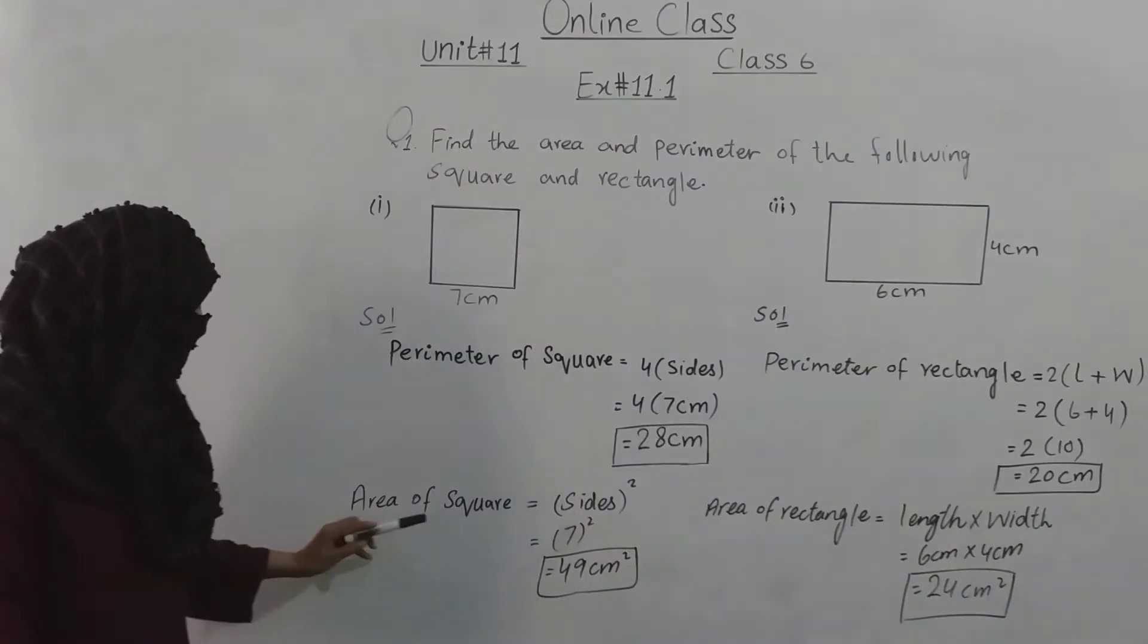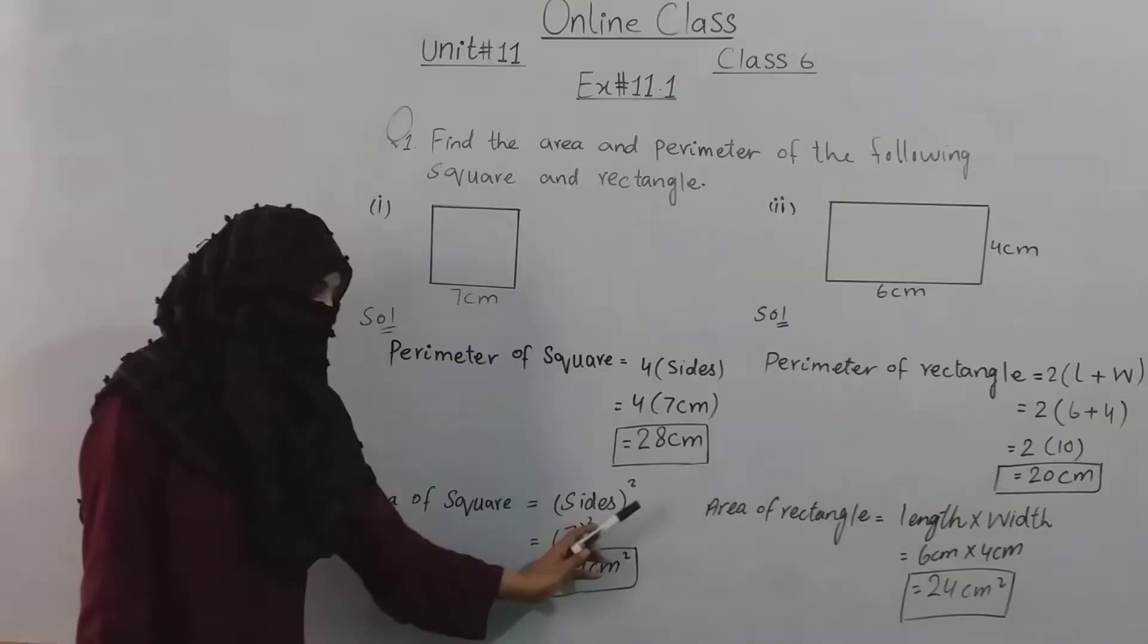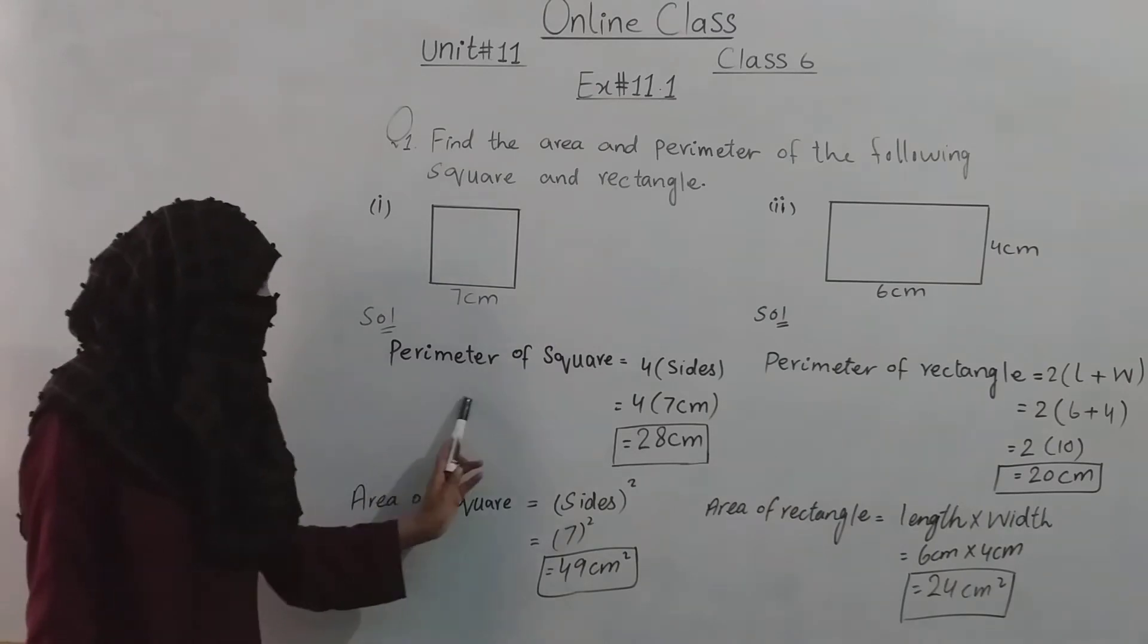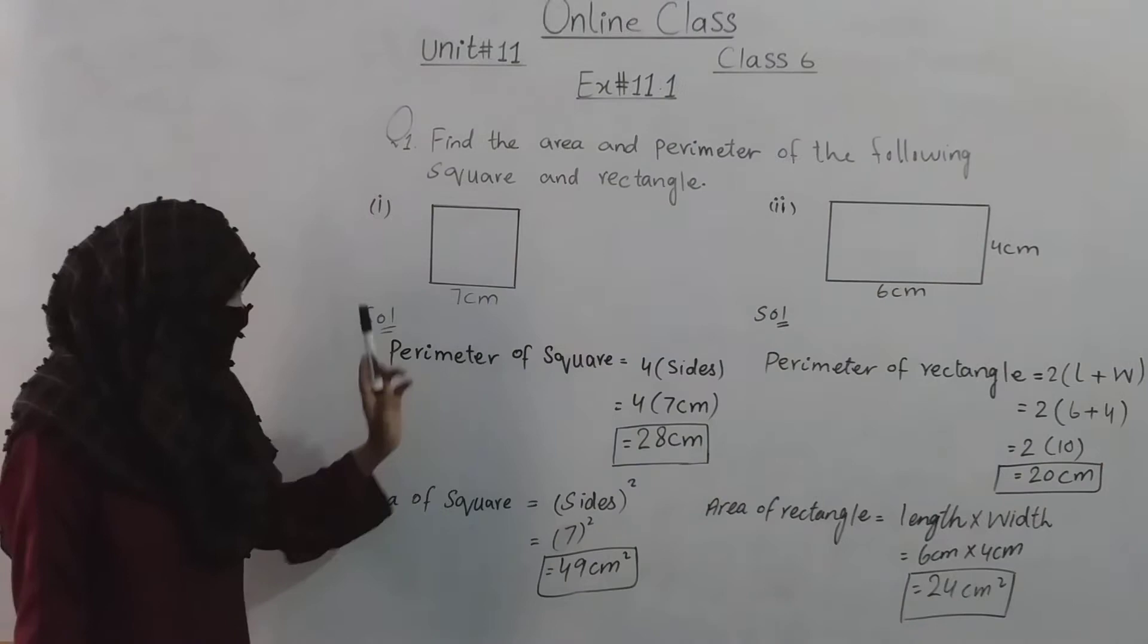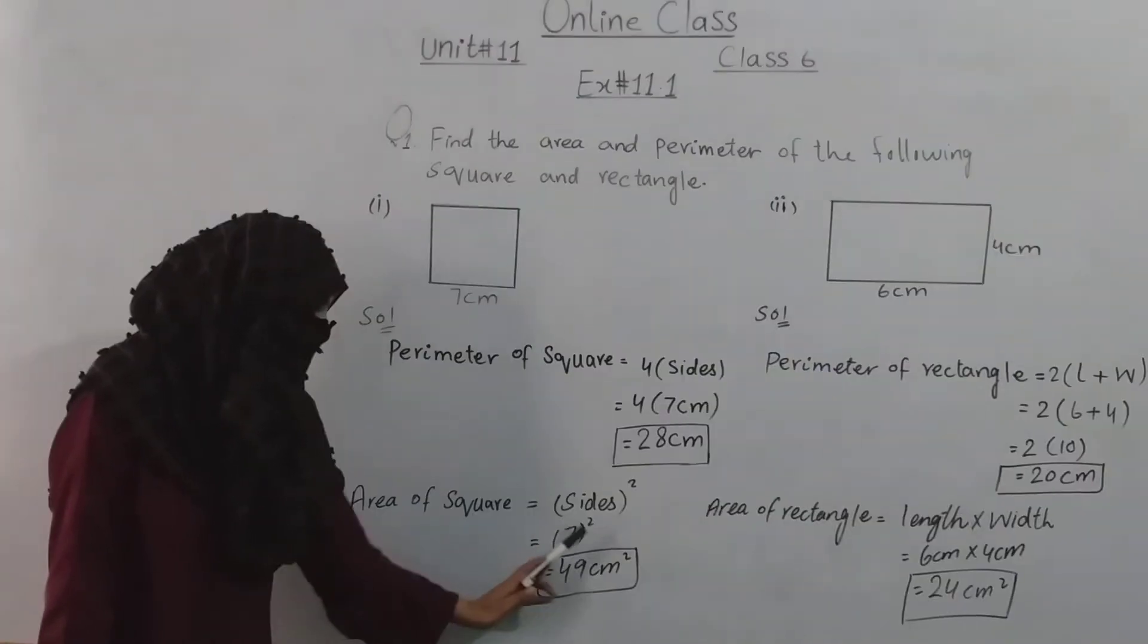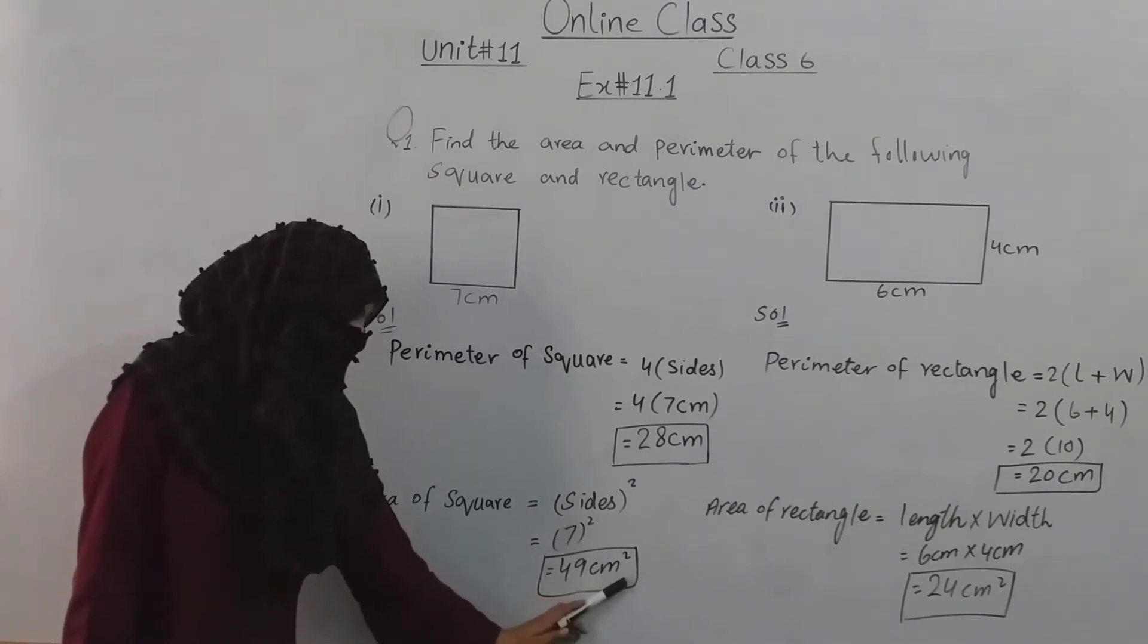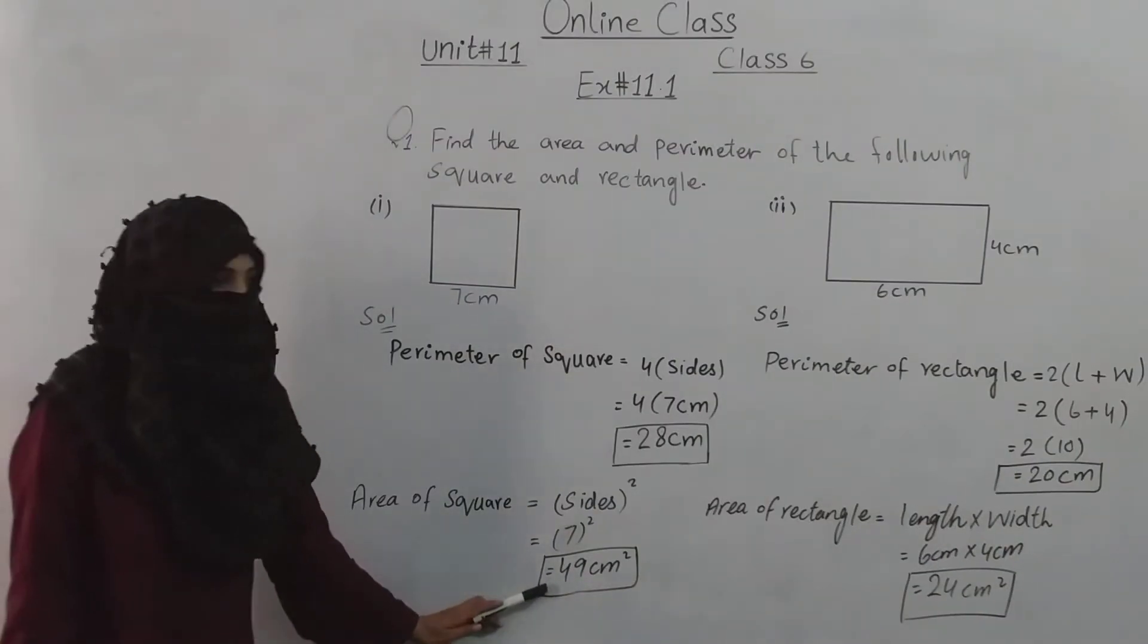Next, we need to find the area. The area of a square equals side squared. We take the square of the given side. Seven squared is forty nine. So the area is forty nine centimeter square.